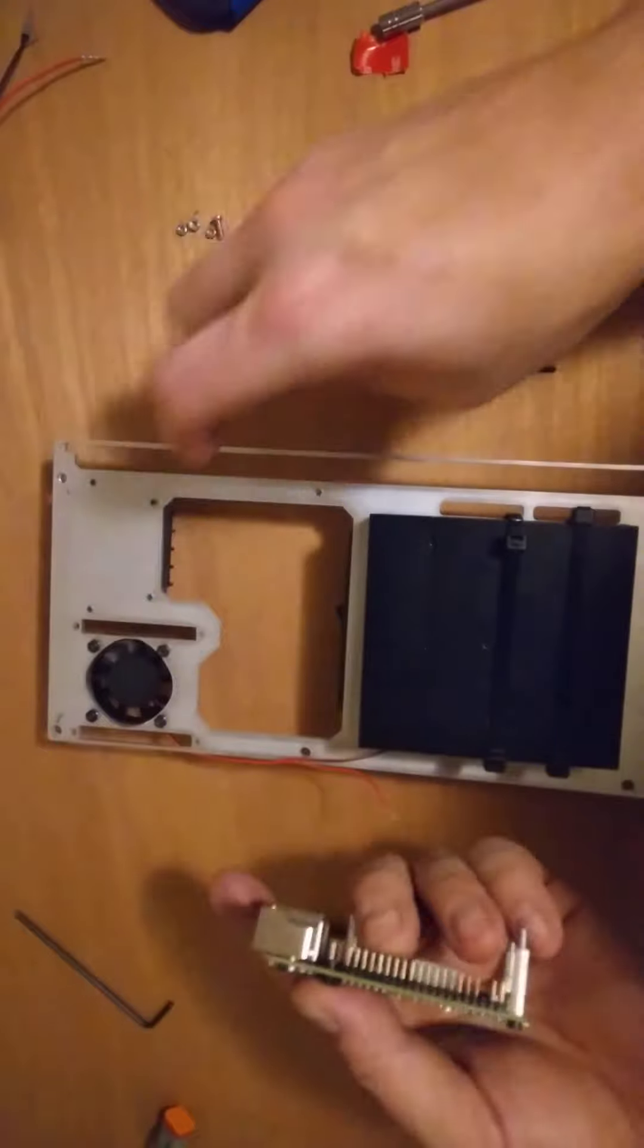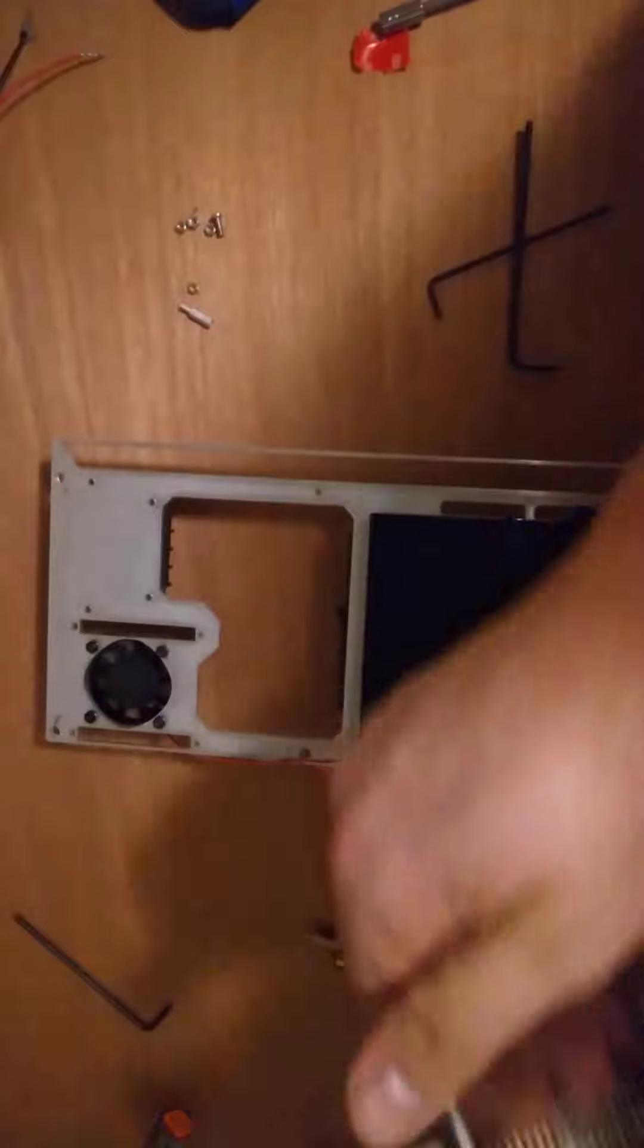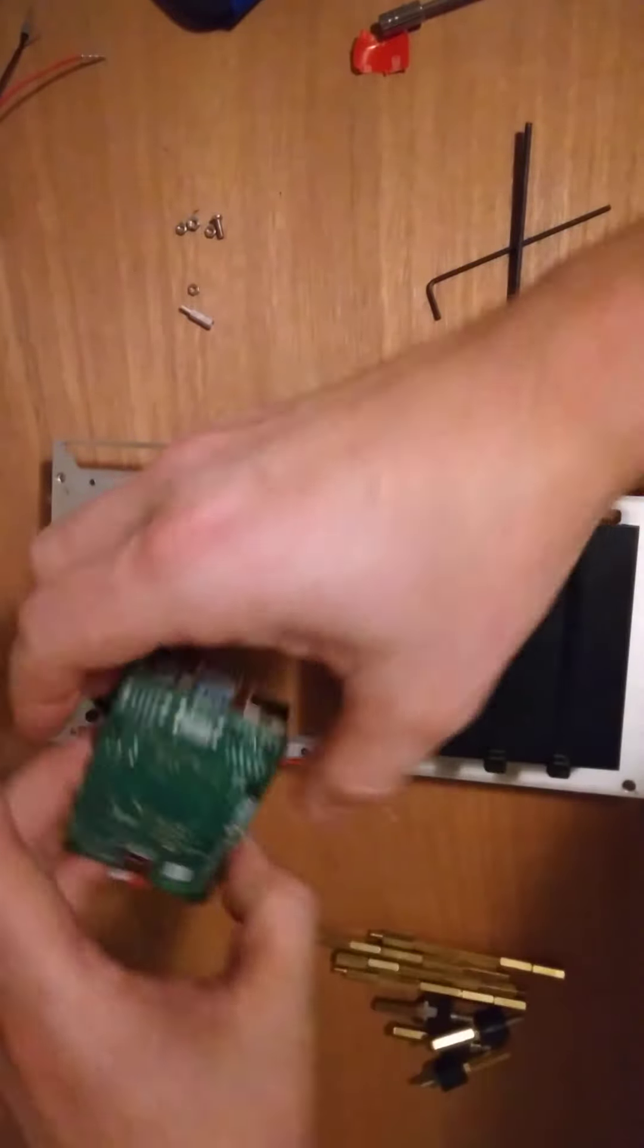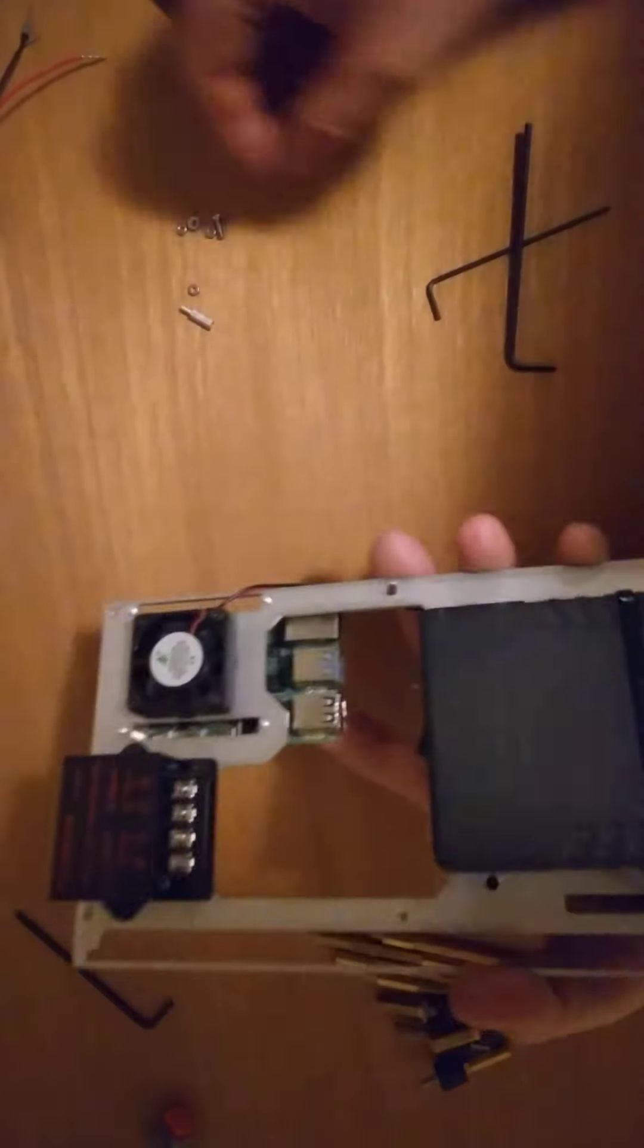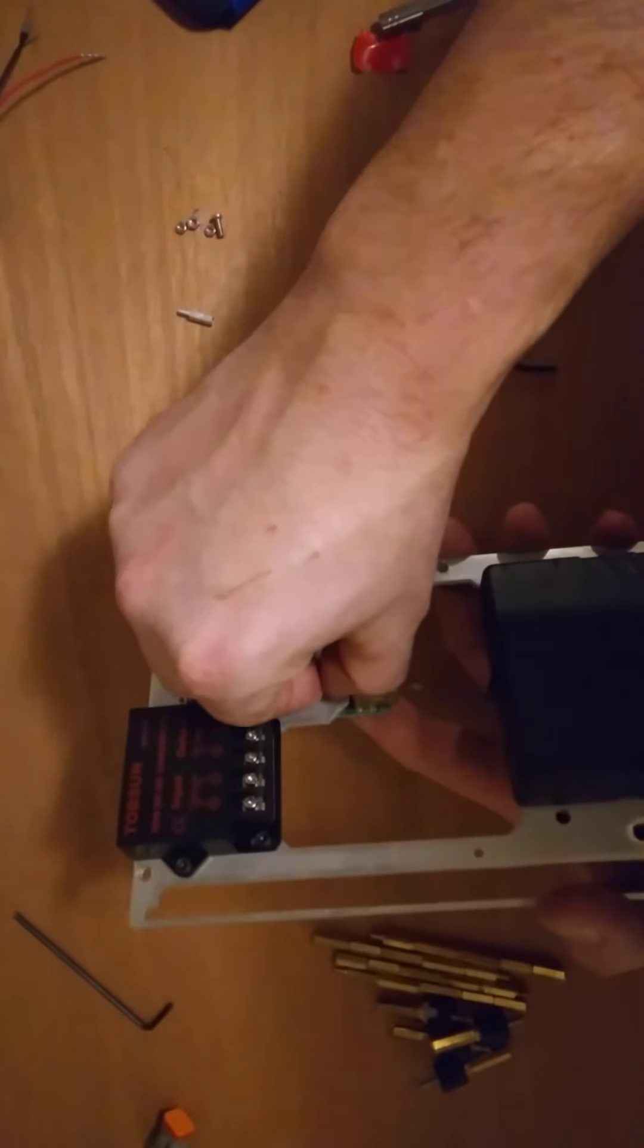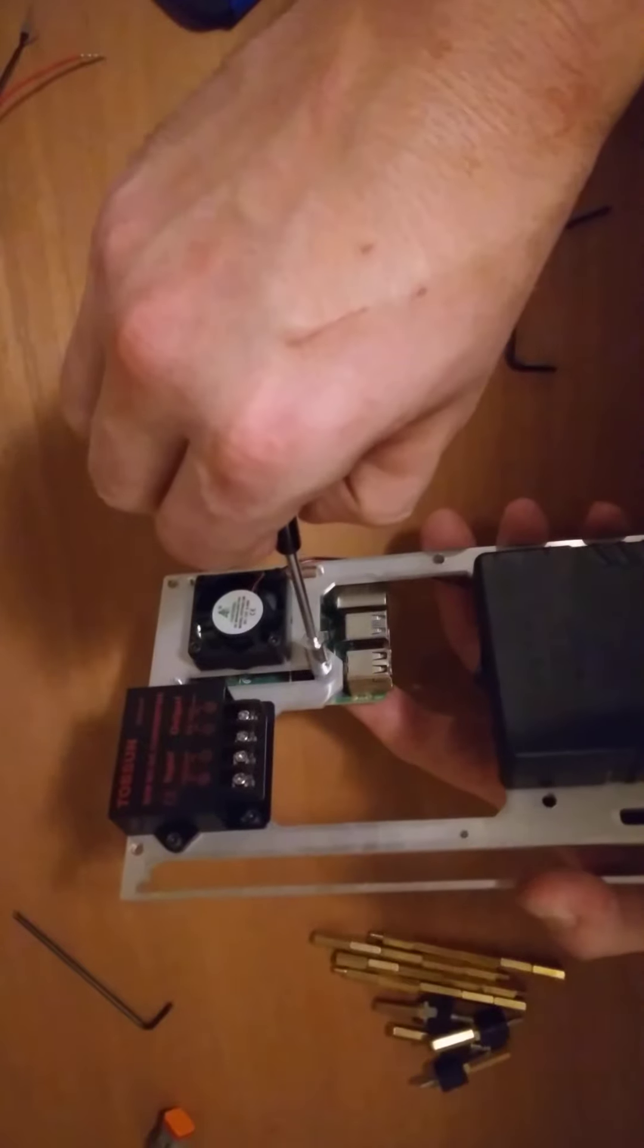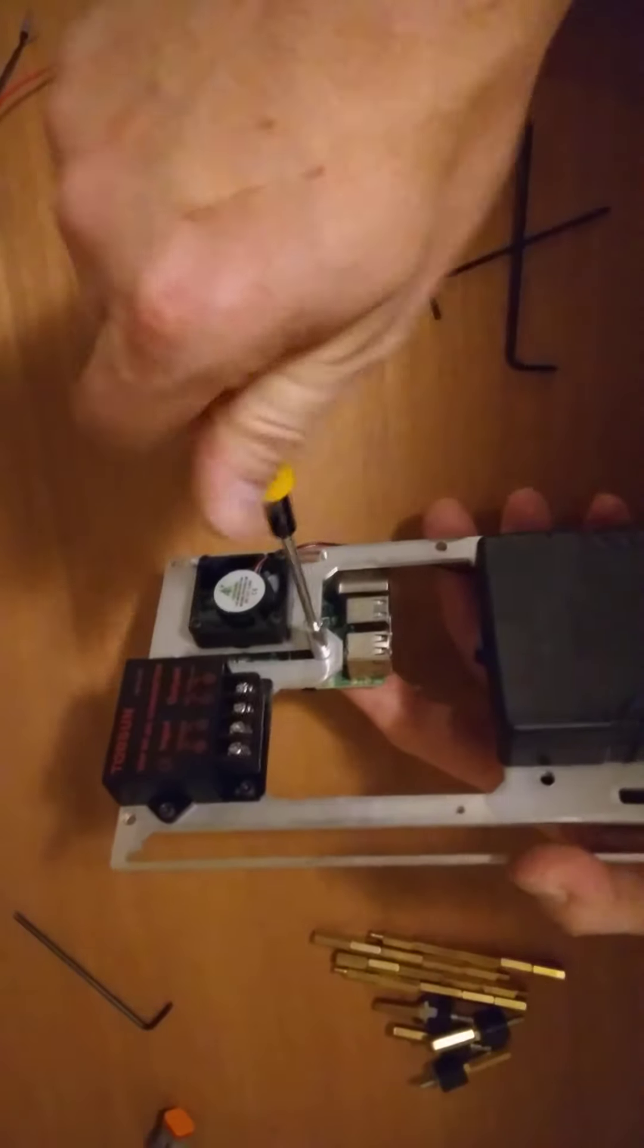Okay, this is putting in those M2.5s. All of the other hardware was M3, this hardware is M4, all the standoffs. We'll just finger tighten that. Put this guy in here this way, and then we'll put these itsy-bitsy tiny little M2.5 washers on here. There we go.